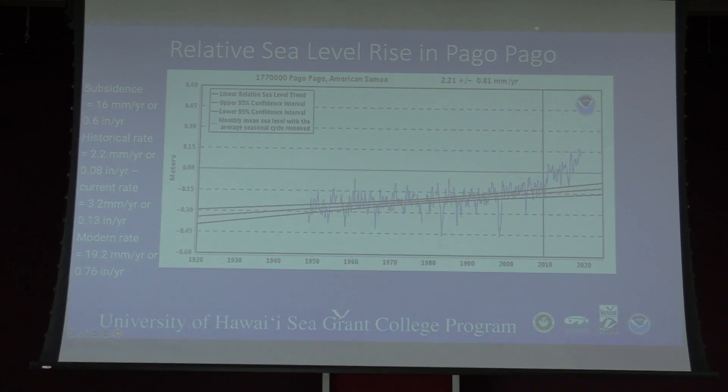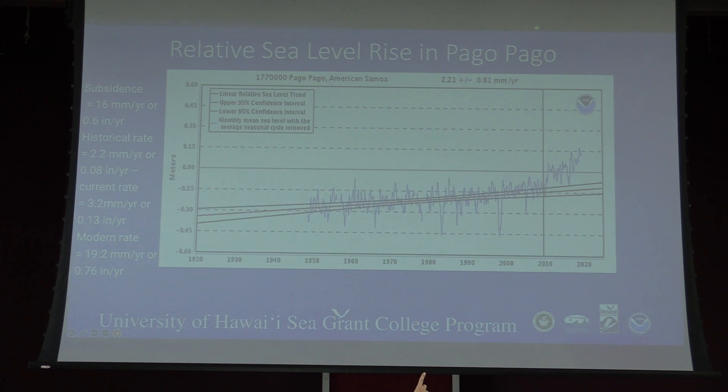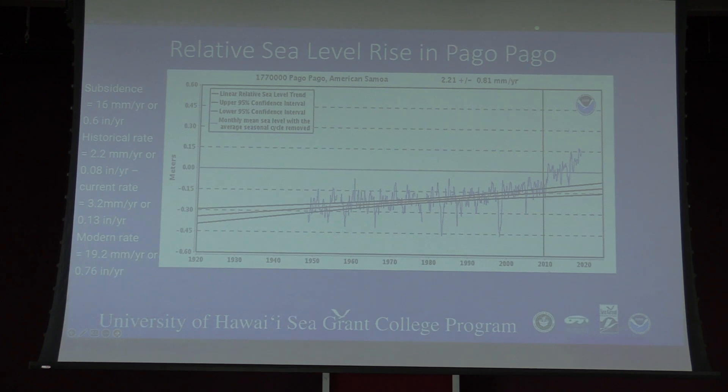The slides are a bit washed out because of all the light in here, but it is recorded and I'm happy to share any of this with anybody who reaches out. You can see that vertical black line — that is the date of the tsunami — and you can see that the blue line after that went up quite a bit. That happened because our tide gauge is attached to our seawall behind Fangatomo Market. As the island was sinking, it's recording this higher and higher amount of water above it. That's why you see this trend going up so much.